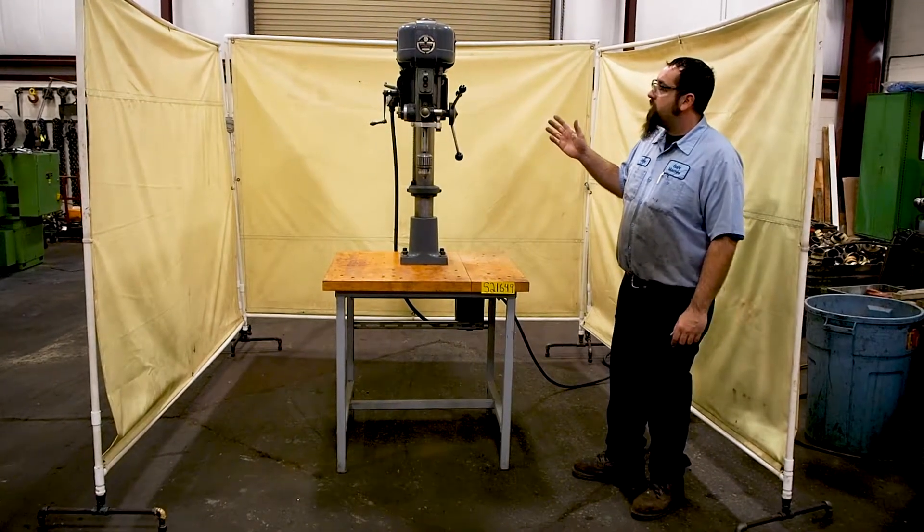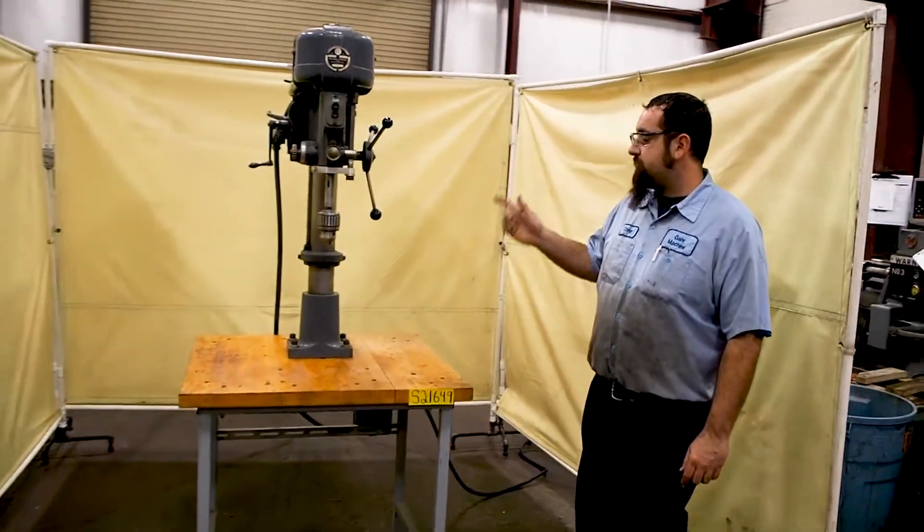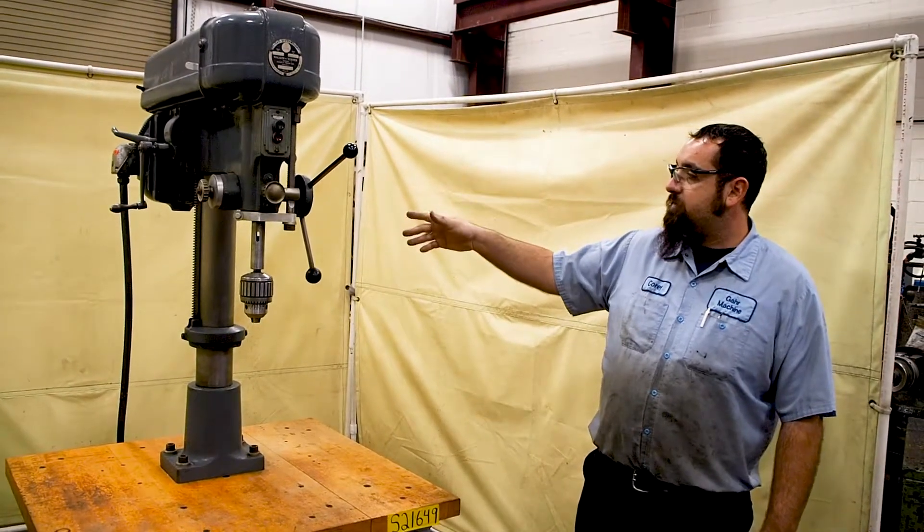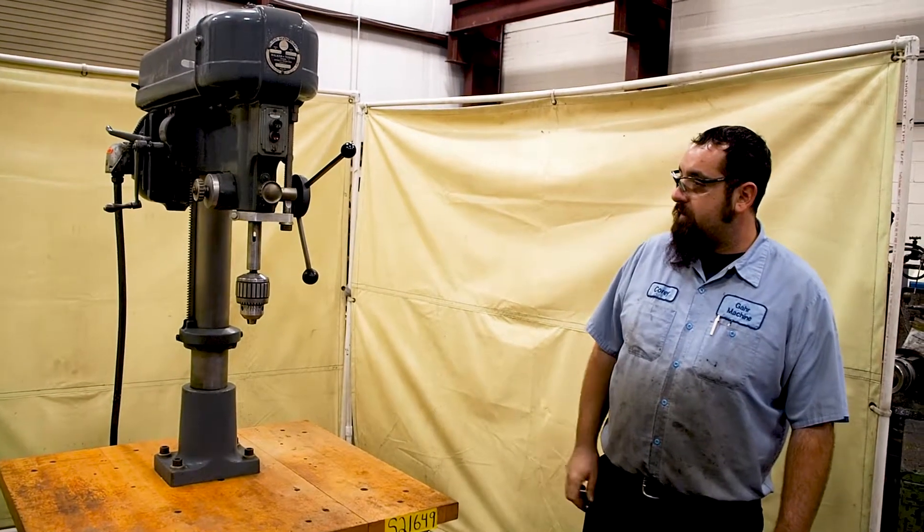Here we have a 20-inch Walker Turner drill press. This unit is currently wired for 220 volts but can also be wired for 440. This unit also has a 3/4 horsepower motor on it.